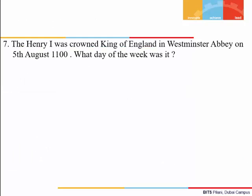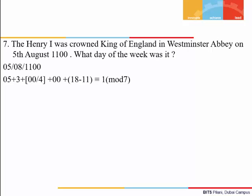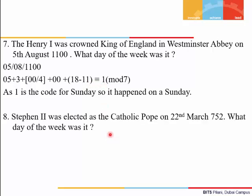Julian calendar examples: Henry the First was crowned King of England at Westminster Abbey on 5th August 1100. Since this is a Julian calendar date, d = 5, m = 3 (August), last two digits y = 00, ⌊00/4⌋ = 0, and the correction is 18 minus the first two digits of the year. The result is congruent to 1 mod 7, so it happened on a Sunday.